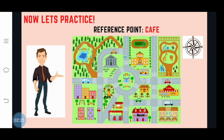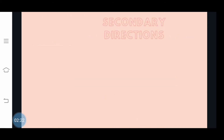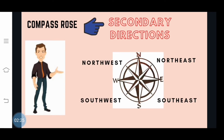Now let's continue learning about the Compass Rose using the secondary directions. In between primary directions is what we call secondary directions. In between north and east, we have the northeast. In between north and west, we have the northwest. In between south and east, we have the southeast. And in between south and west is southwest.